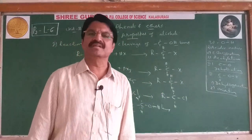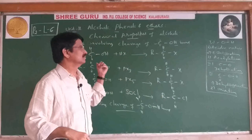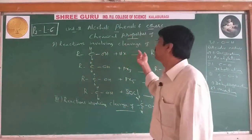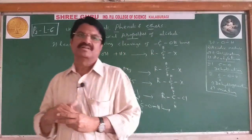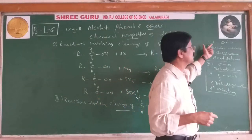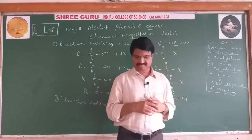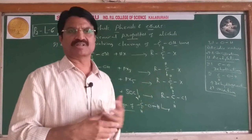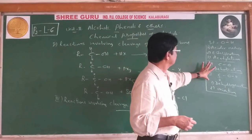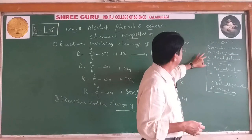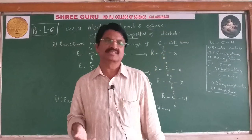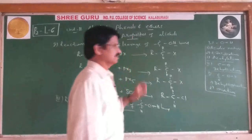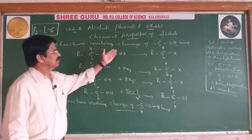Hello students, we are studying about chemical properties of alcohols. There are three types of reactions: first type involves O-H bond cleavage, second type involves C-O bond cleavage, and third type involves C-H bond cleavage and O-H bond cleavage. Today I will explain these types. Reactions involving cleavage of the C-O-H bond can be considered together.